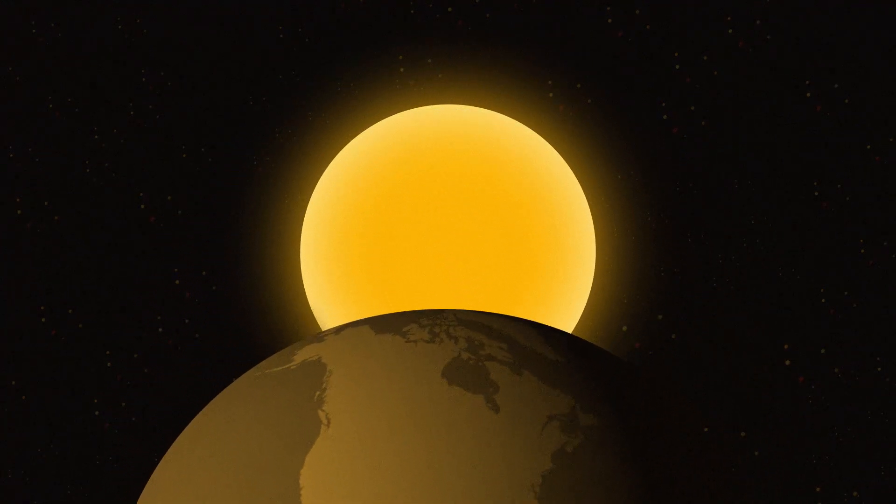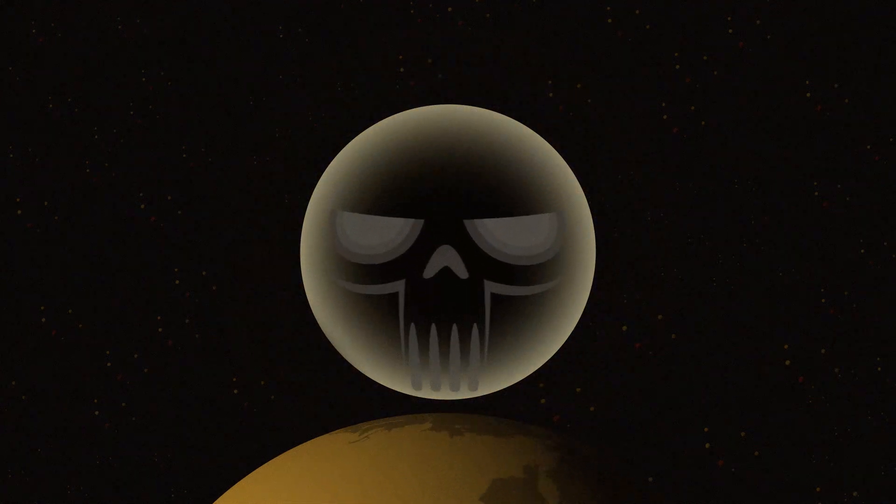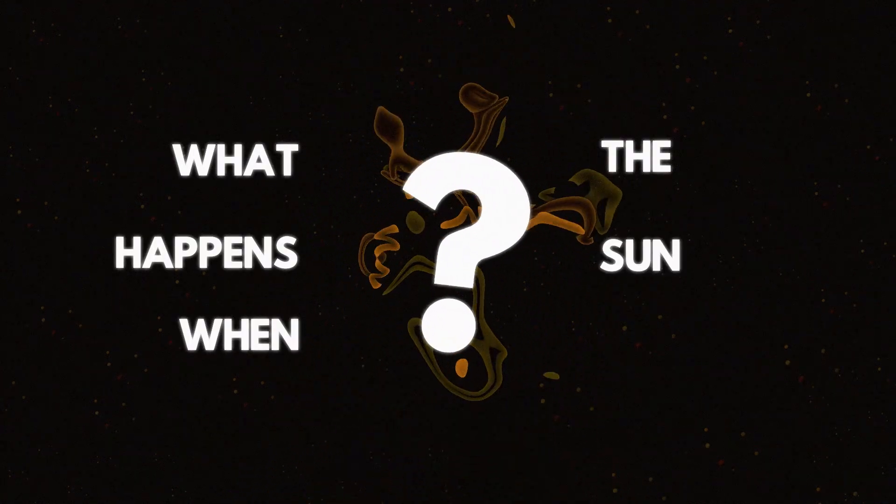Life as we know it would not be possible without the heat and light of the sun. Like any celestial object in the universe, the sun's lifespan is finite. But what happens when the sun dies?